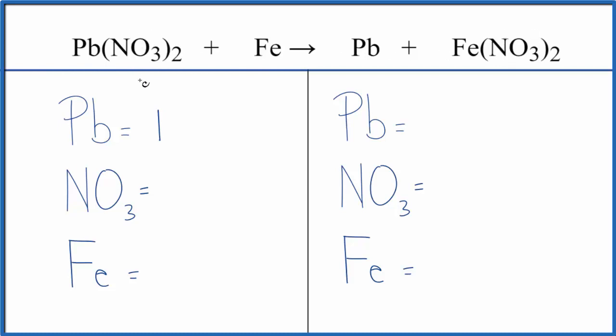So I want to count this as one item. I have one of them times two, which gives me two nitrate ions, one iron. I have one lead, one nitrate times two, that gives me two of those, and then just one iron.